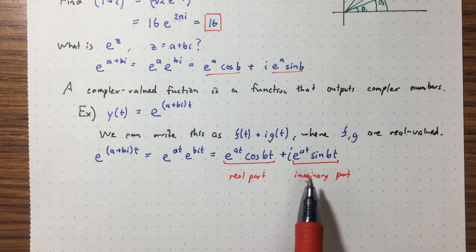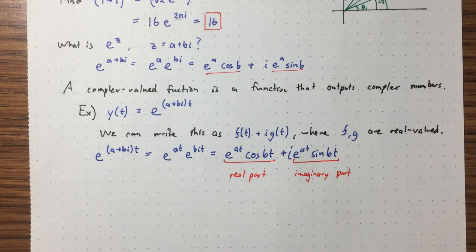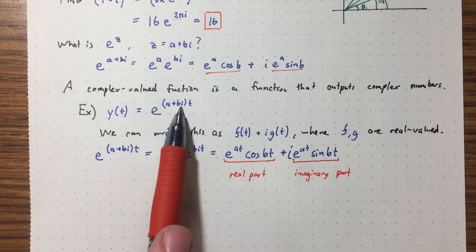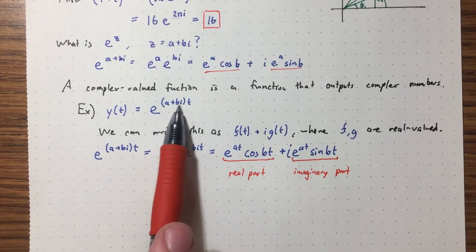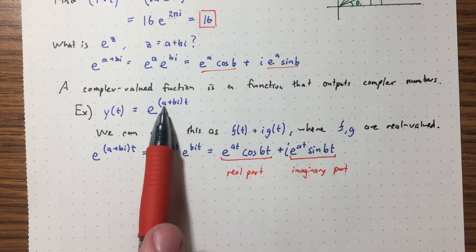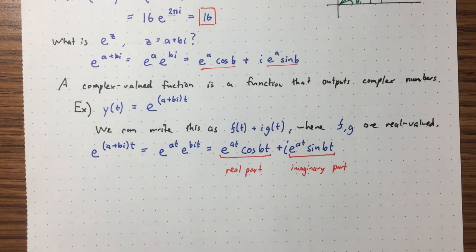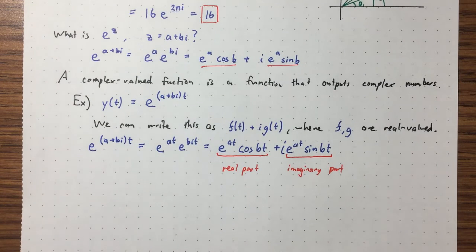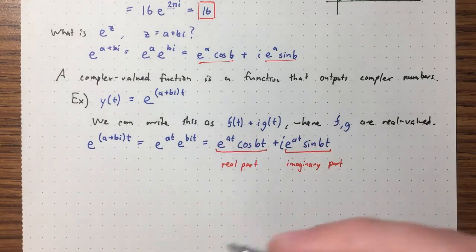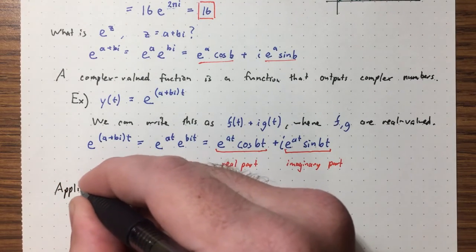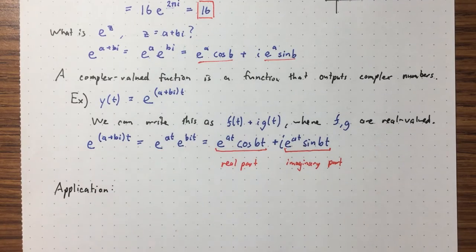To foreshadow the next lecture: when our characteristic polynomial has complex roots, we get a complex function e^((a+bi)t). The real part e^(at)cosbt and imaginary part e^(at)sinbt will actually be the real solutions to the differential equation — we'll see that next lecture.